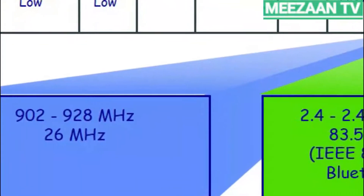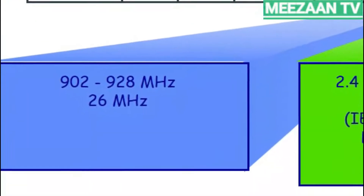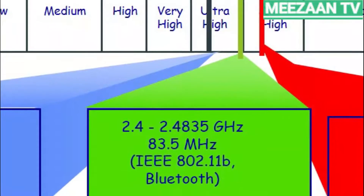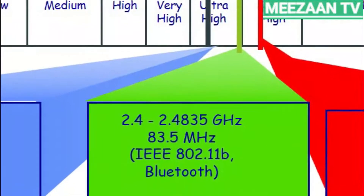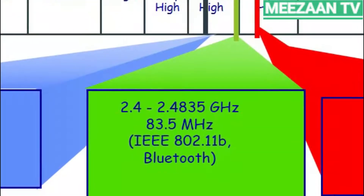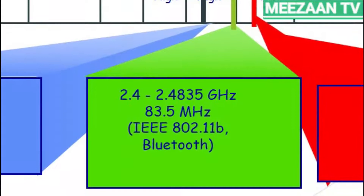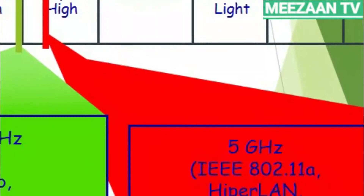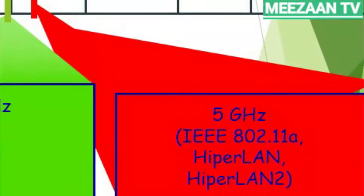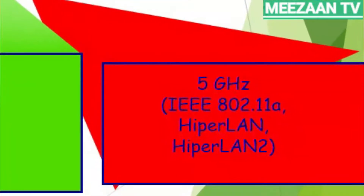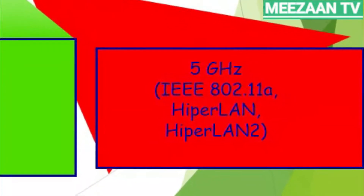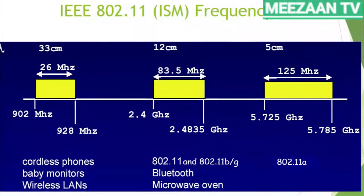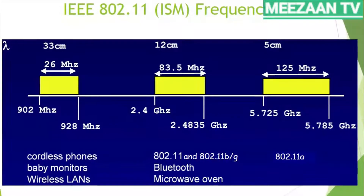The ISM bands range from 902 to 928 MHz, 2.4 to 2.4835 GHz — where IEEE 802.11b and Bluetooth operate — and the 5 GHz band, where IEEE 802.11a, HiperLAN 1, and HiperLAN 2 operate. This slide shows the ISM bands in more detail with the corresponding technologies used as wireless LAN.